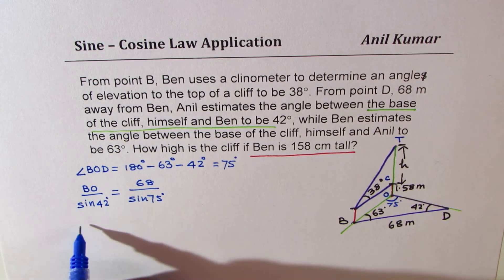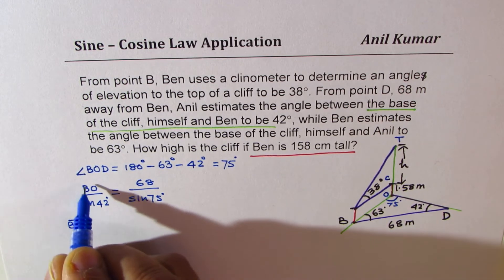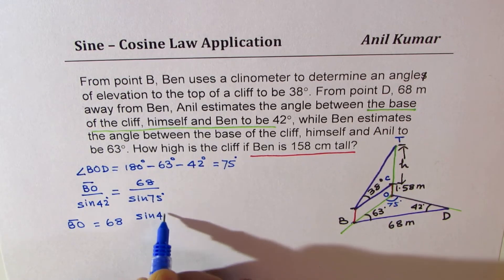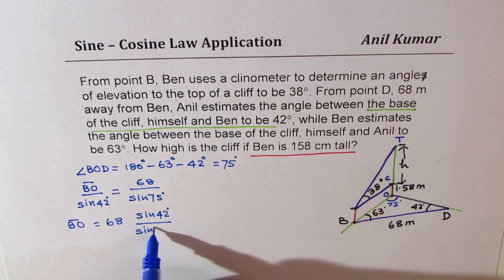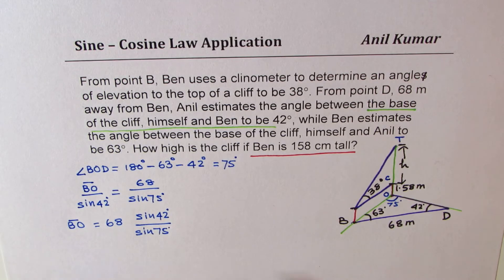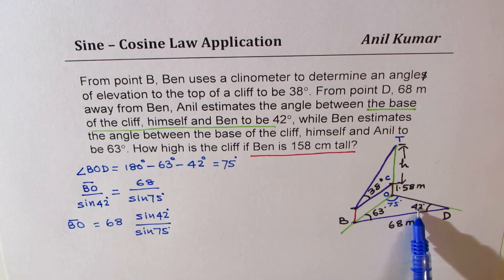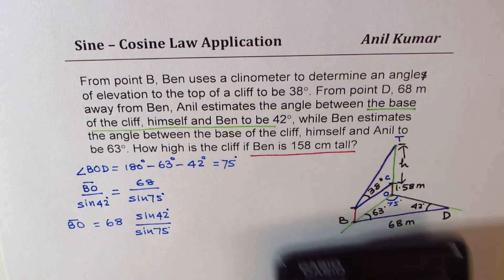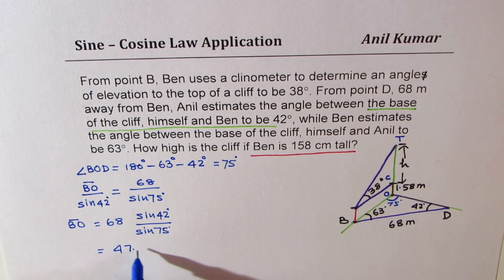Now, from here, we can find what BO is. So BO, this is the length BO, is equal to 68 times sine of 42 degrees divided by sine of 75 degrees. So it is important to note that length of a side is basically proportional to the angle opposite. That is what it is. So BO, we are multiplying by the angle opposite to BO and dividing by the other angle. So let's calculate this answer. We have 68 times sine 42 divided by sine 75, which is equal to 47.1.